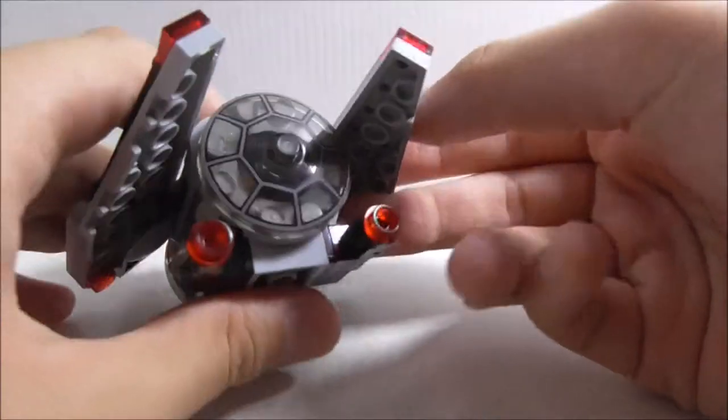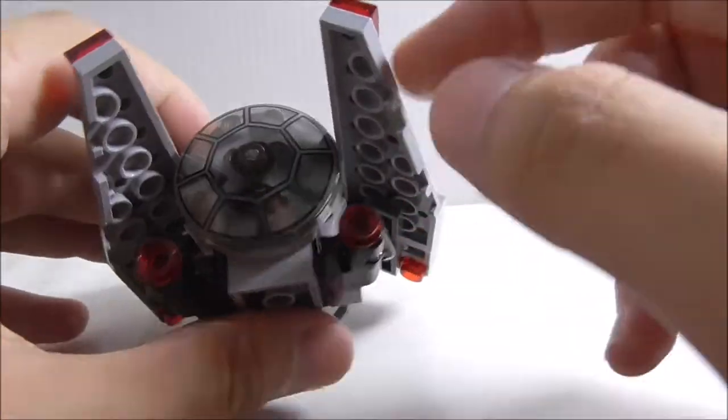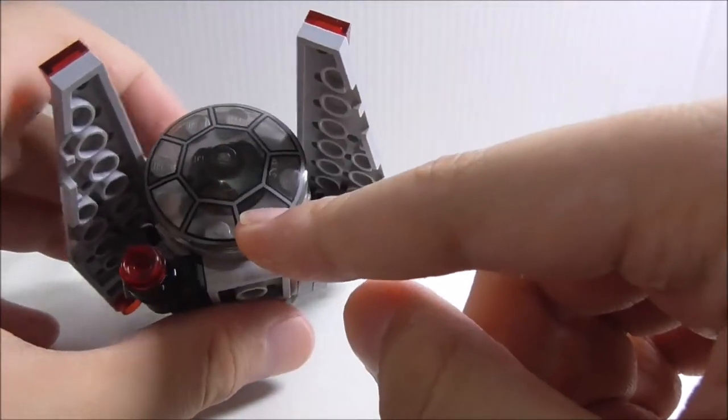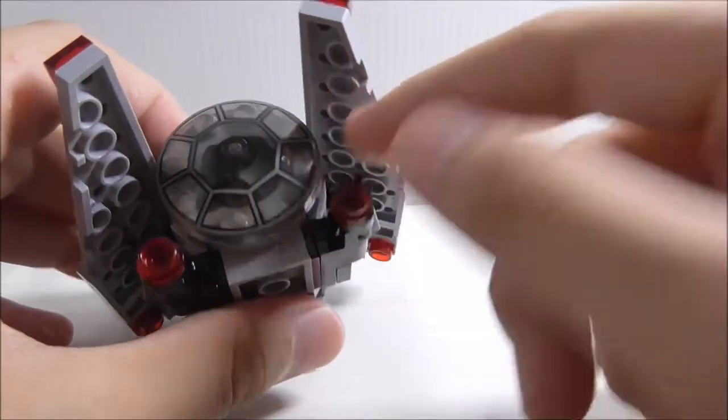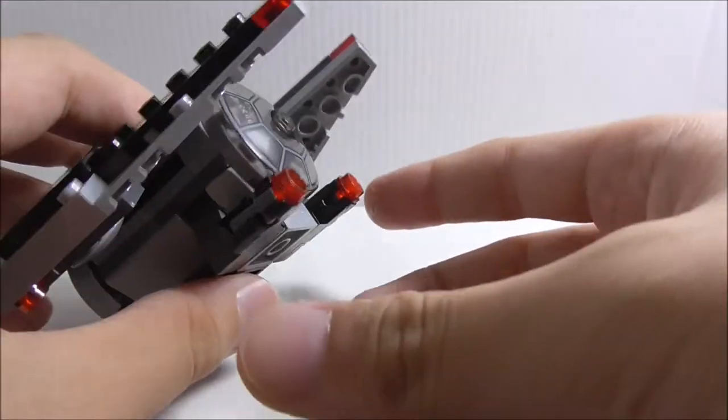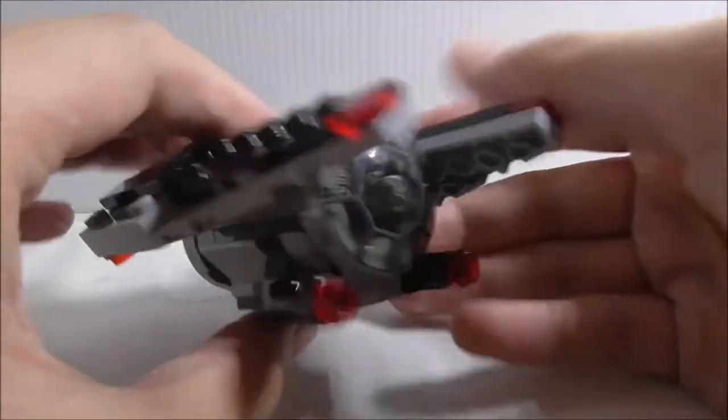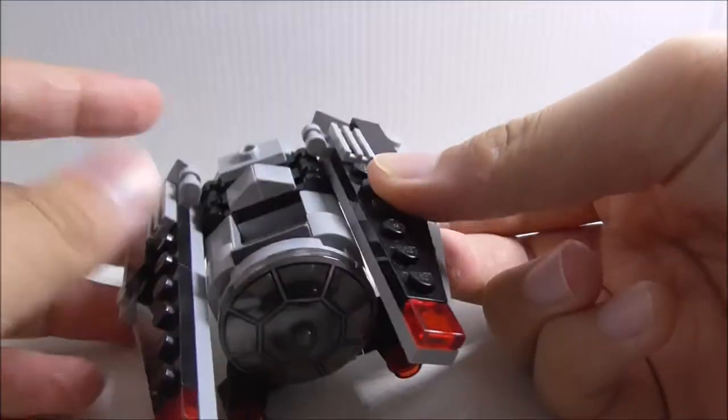This is the TIE Striker itself. At the front you have this printed TIE fighter cockpit piece, which is a very common piece but still nice to get. You have the structures at the bottom which work normally.